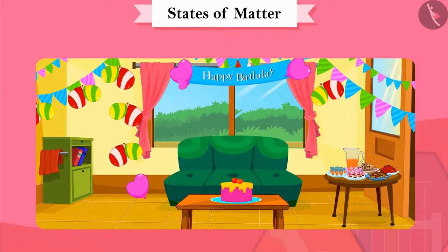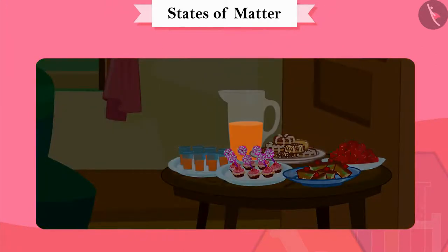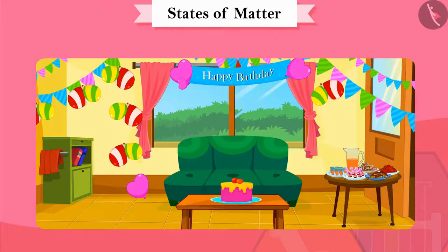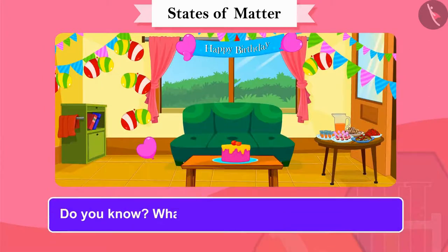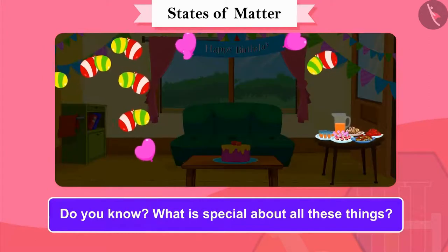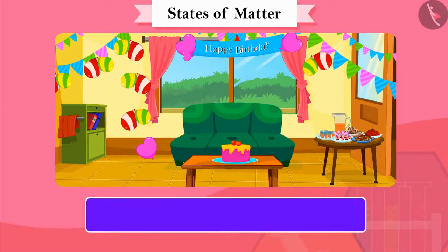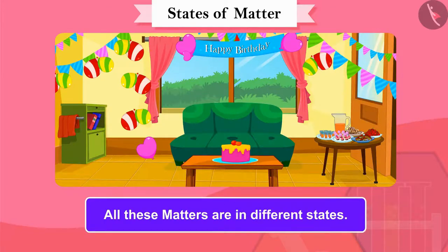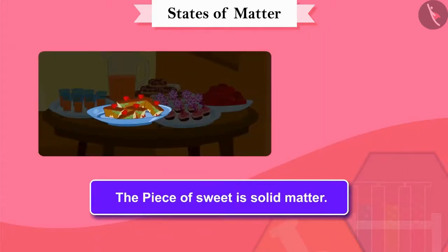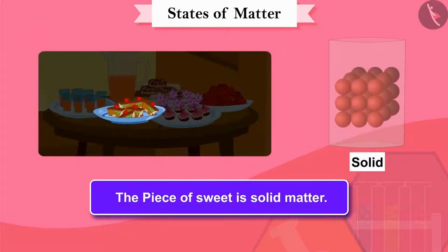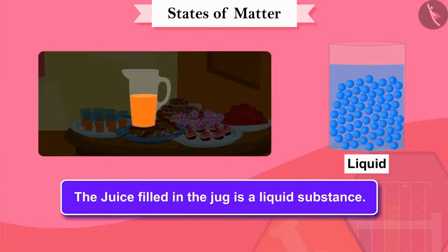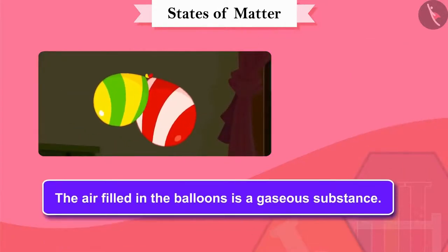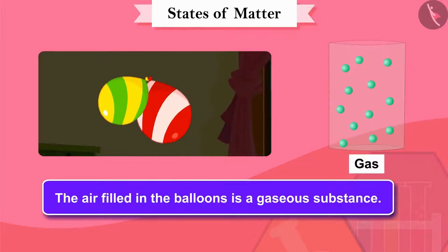Let us see what items are kept here. There are some sweets and juices kept for the guests, and the room is decorated with balloons. All these matters are in different states — the piece of sweet is solid matter, the juice filled in the jug is a liquid substance, and the air filled in the balloons is a gaseous substance.